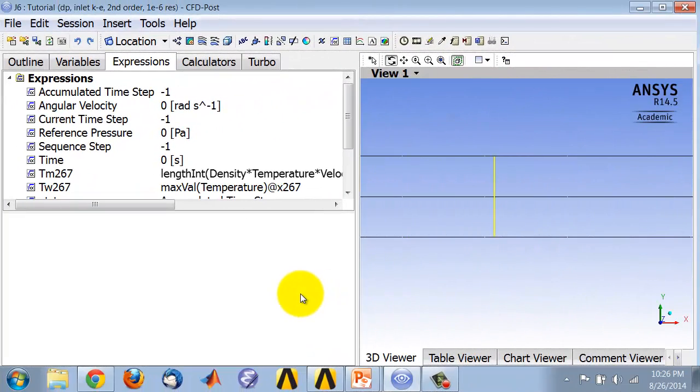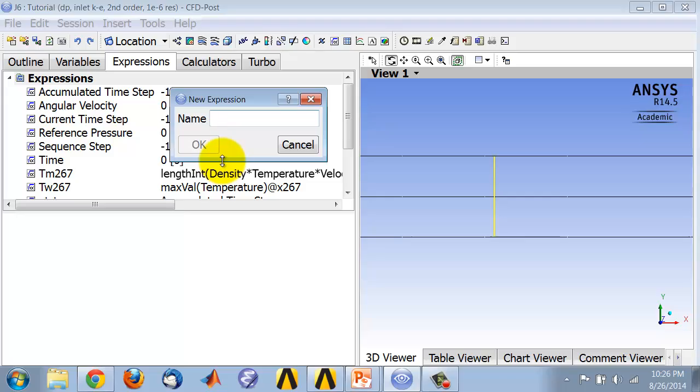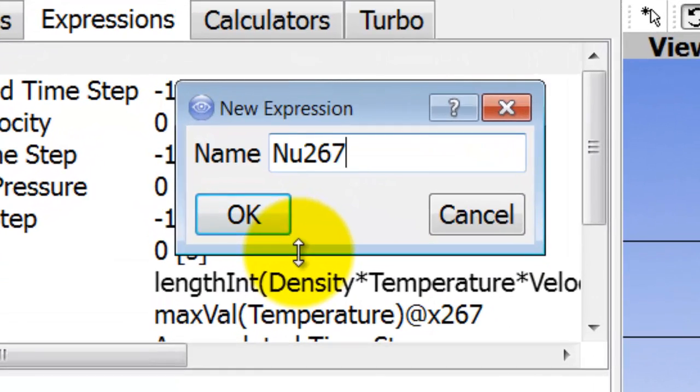Let's create an expression to calculate the Nusselt number at x equal to 2.67. So right click, I'll call it nu267.